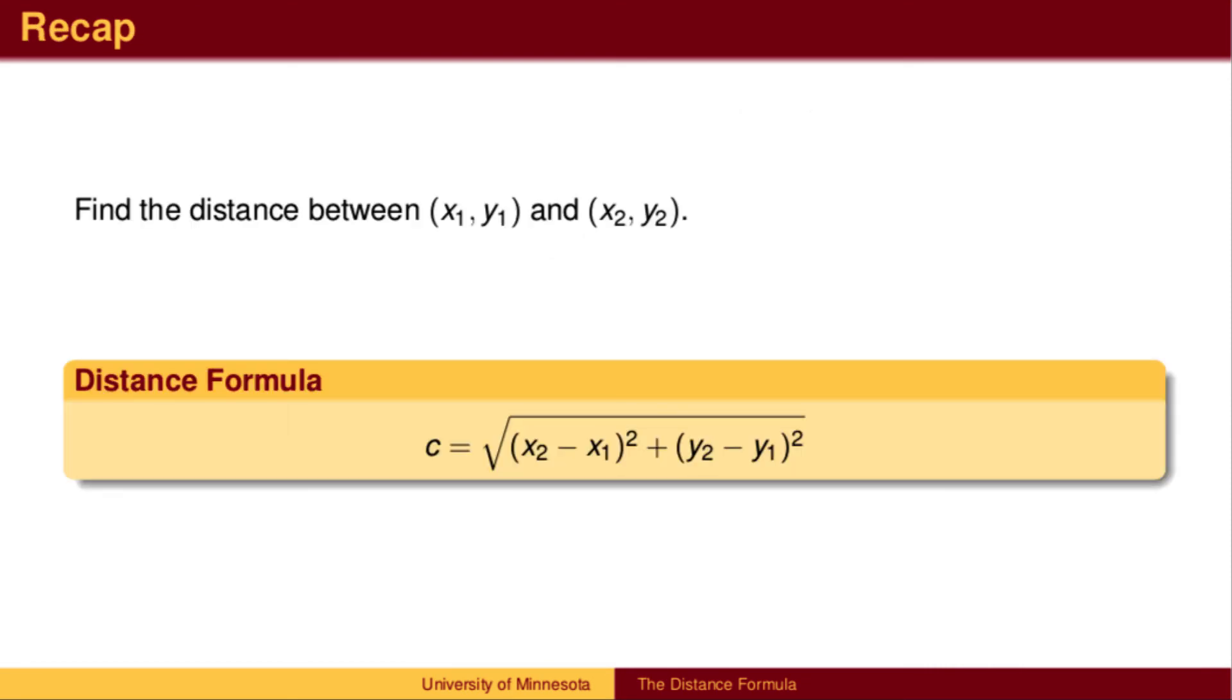To recap, the distance formula is the Pythagorean Theorem after taking a square root on both sides. The lengths of the x-leg and y-leg are found by subtracting coordinates.